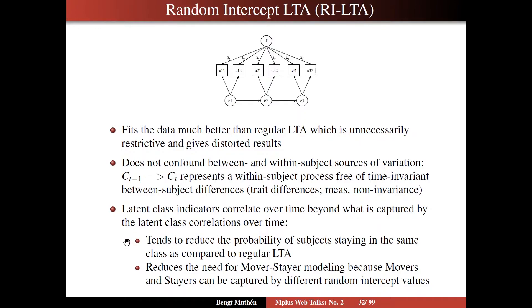Because of that, it tends to reduce the probability of subjects staying in the same class over time as compared to regular LTA. Part of the staying-in-the-same-class tendency is due to individuals' trait values influencing outcomes at different time points in the same way. It also reduces the need for mover-stayer modeling, since movers and stayers can be captured by different random intercept values. So instead of a dichotomy of movers and stayers, you have a continuous difference by F values differing across individuals.